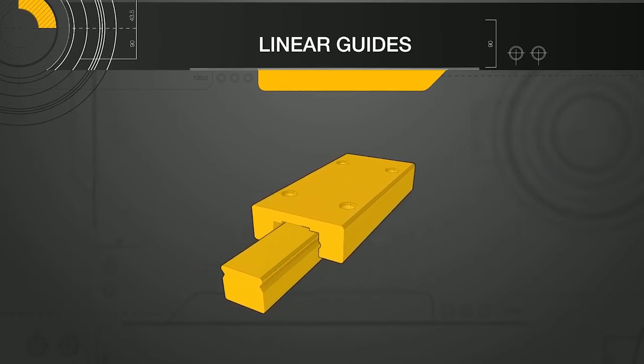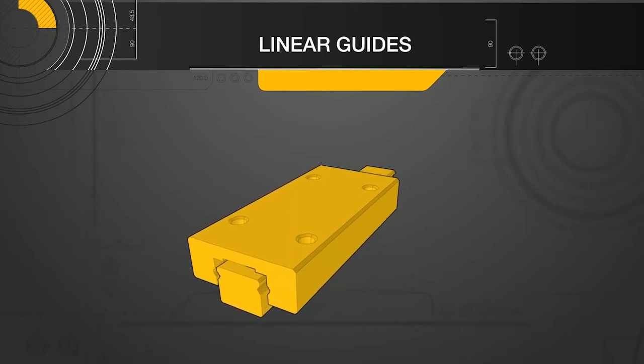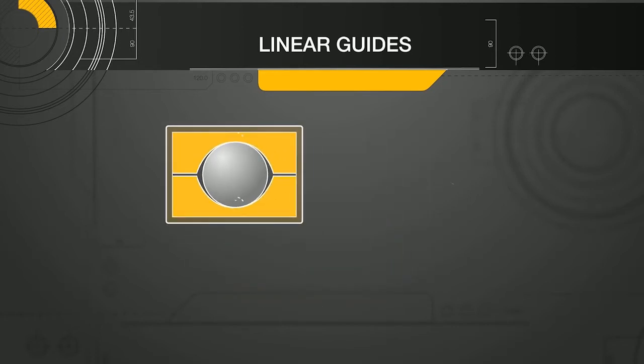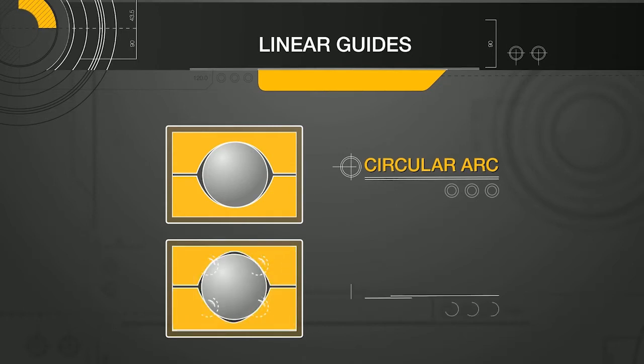Let's start by reviewing the two main contact types in linear guides. The contact between the ball and rail in a linear guide can be classified as either two-point contact, commonly called circular arc, or four-point contact, or gothic arch.